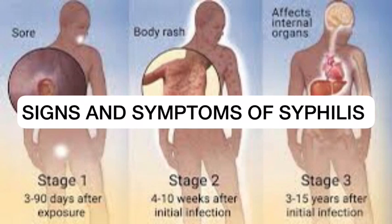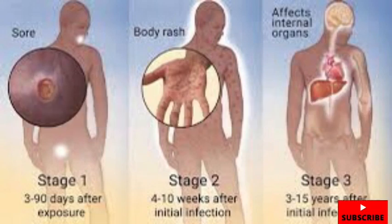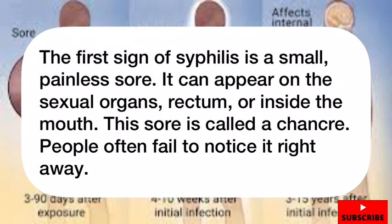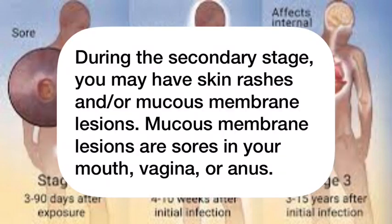Signs and symptoms of syphilis. The first sign of syphilis is a small painless sore. It can appear on the sexual organs, rectum, or inside the mouth. This sore is called a chancre. People often fail to notice it right away.